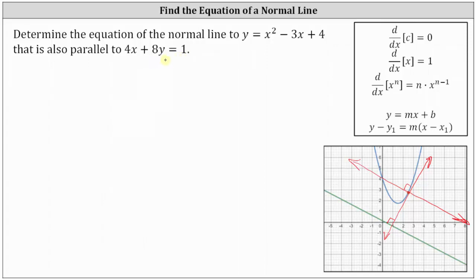So let's first determine the slope of the given line by solving 4x plus 8y equals 1 for y. The first step is to subtract 4x from both sides, which gives us 8y equals negative 4x plus 1, and then divide both sides by 8. Simplifying, we have y equals negative 1 half x plus 1 eighth.